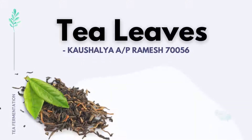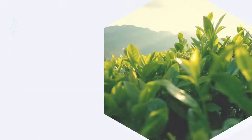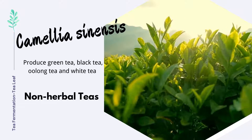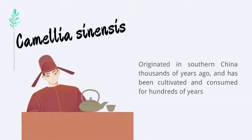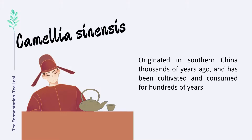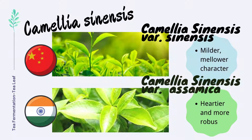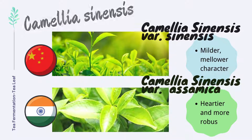The type of tea leaves used for tea fermentation actually originate from the same plant. The botanical name for the tea plant is Camellia sinensis. This plant has been cultivated and consumed for hundreds of years. Camellia sinensis has two main varieties: Camellia sinensis var. sinensis, which has a milder, mellower character, and Camellia sinensis var. assamica, which is generally hardier and more robust.